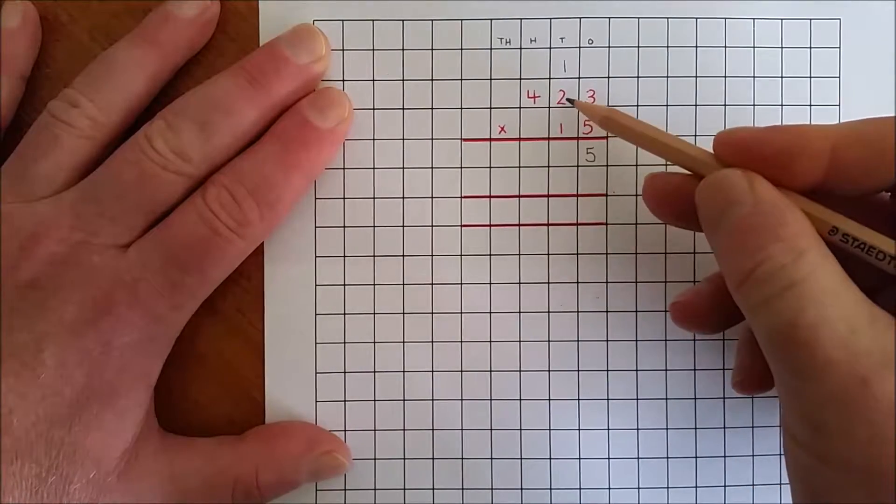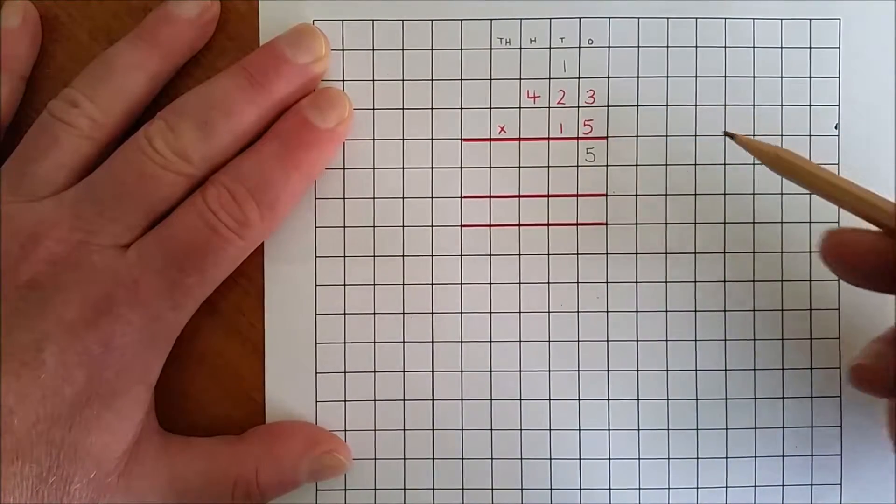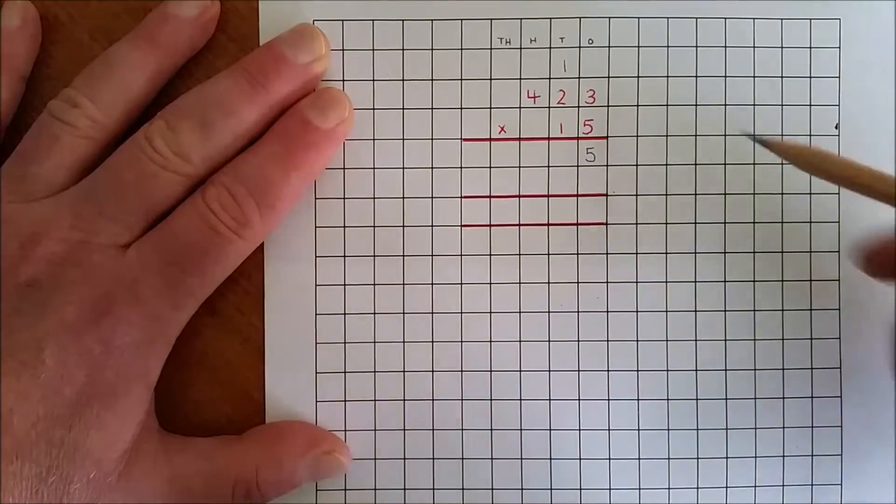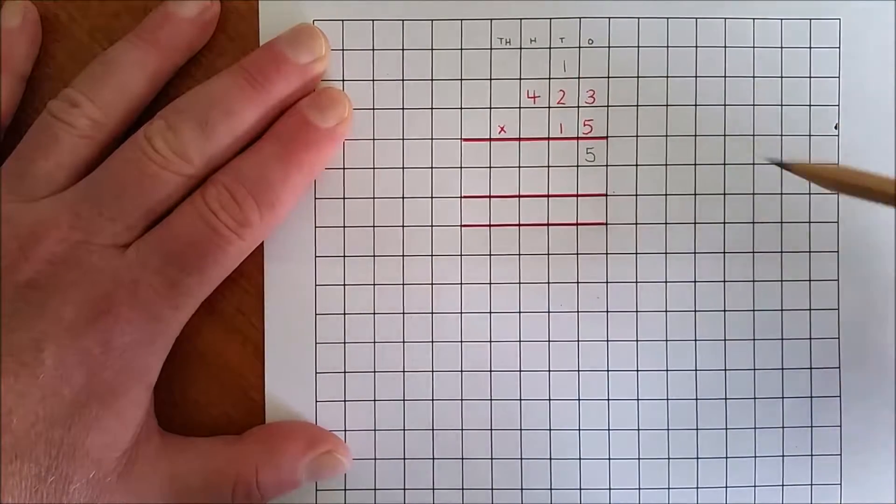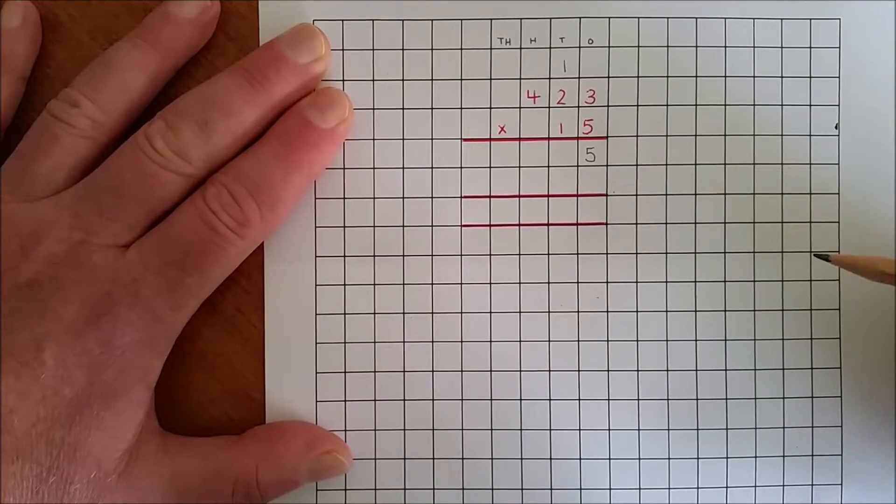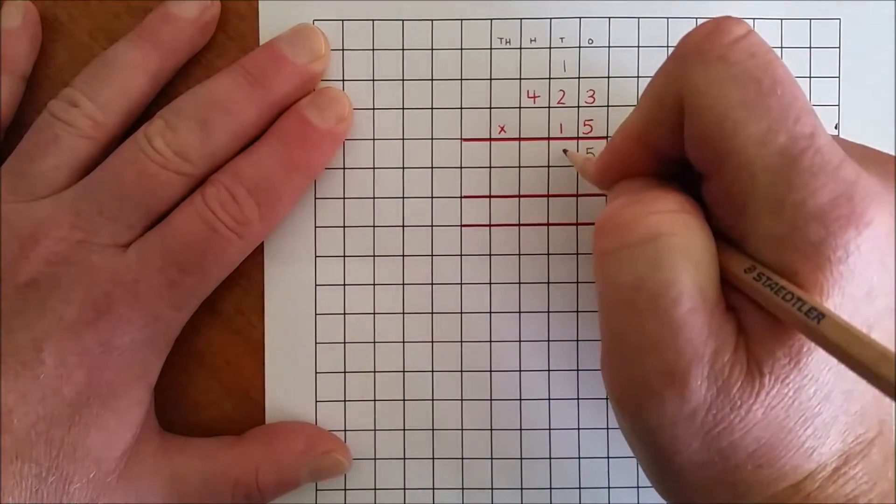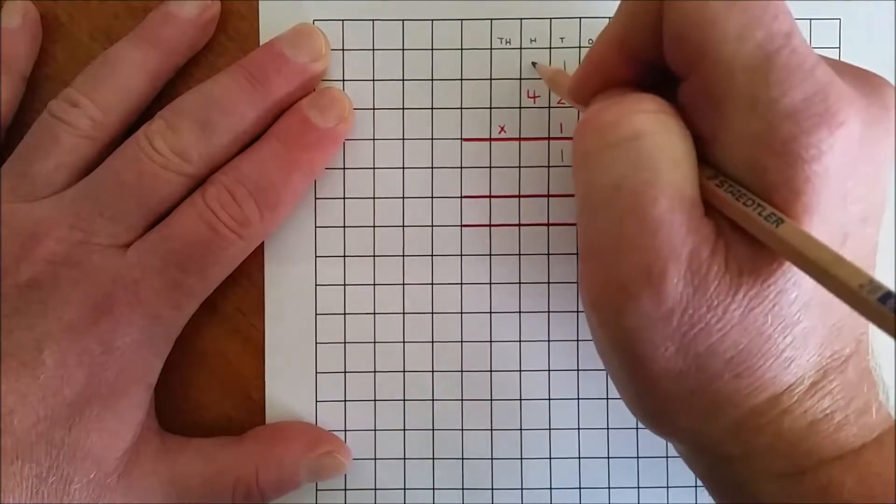Five by two tens is ten tens, plus one ten is eleven tens. Rename eleven tens as one ten and one hundred.